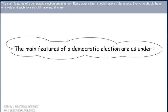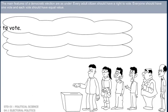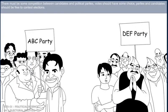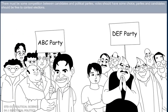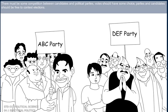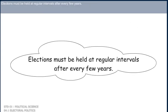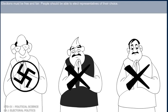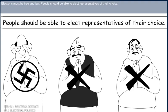The main features of democratic elections are as follows: Every adult citizen should have the right to vote. Everyone should have one vote, and each vote should have equal value. There must be some competition between candidates and political parties. Voters should have some choice, and parties and candidates should be free to contest elections. Elections must be held at regular intervals, after every few years. Elections must be free and fair, and people should be able to elect representatives of their choice.